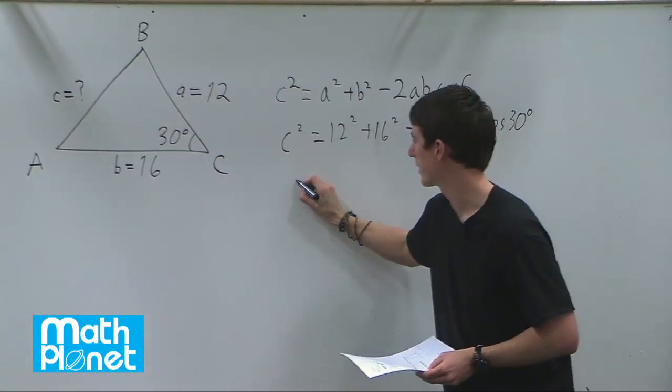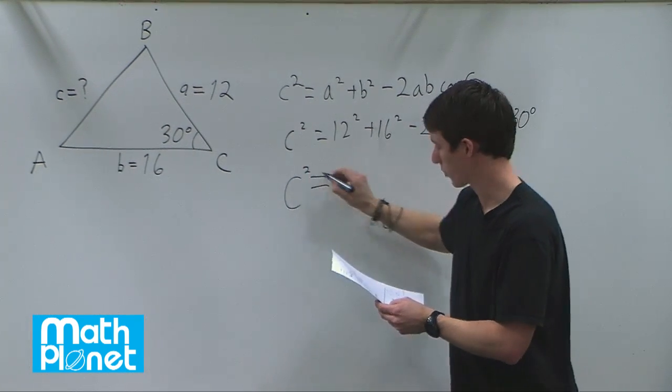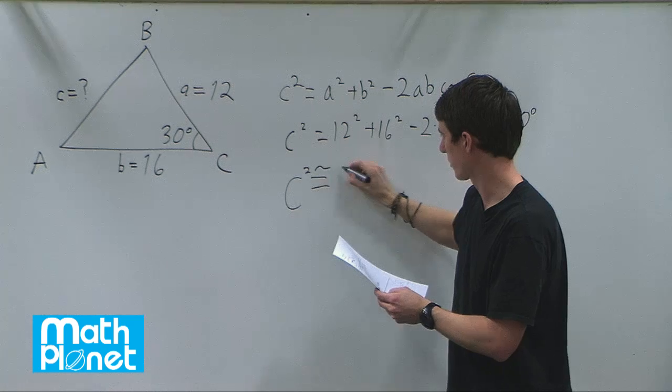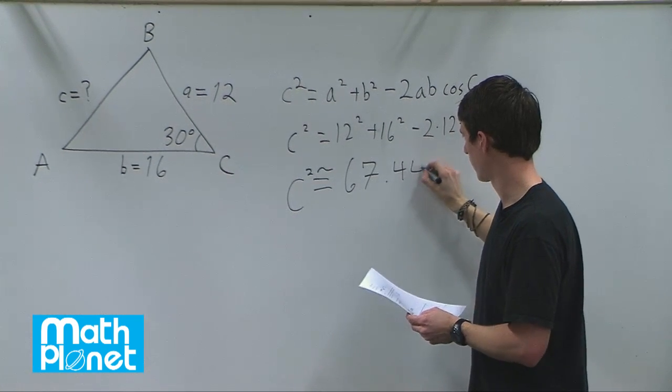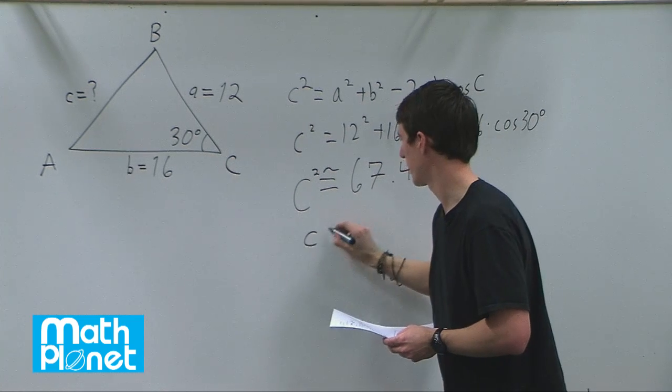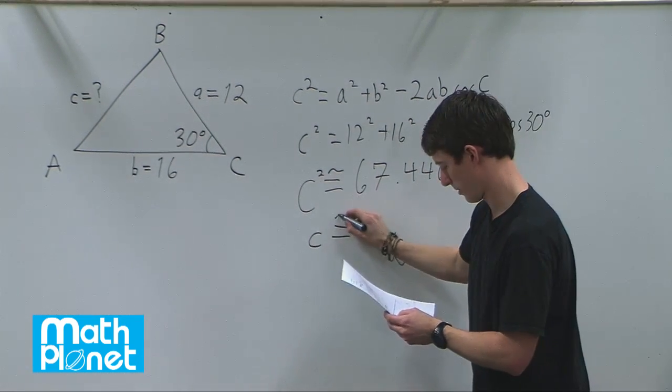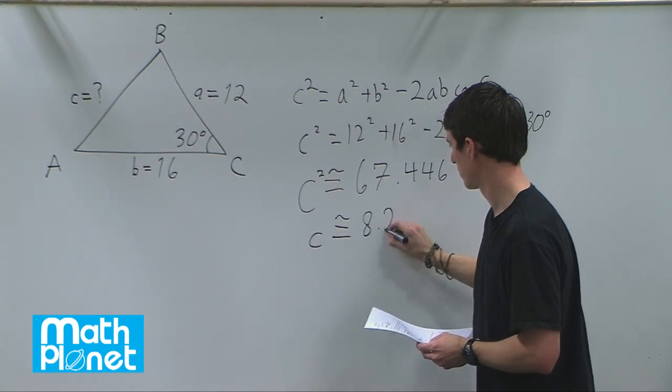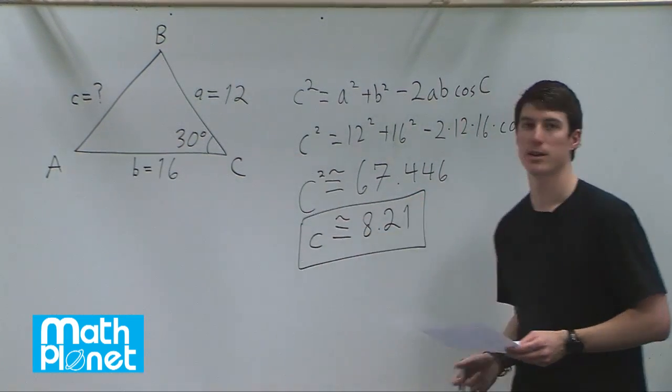We can work all this out and we get c is equal to, c squared we know still is approximately equal to 67.446. So c is then equal to the square root of that which is approximately 8.21. So that is our final answer for the length c.